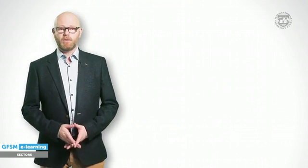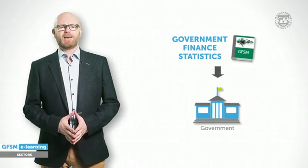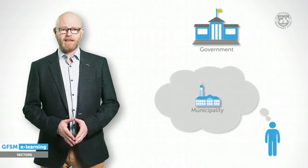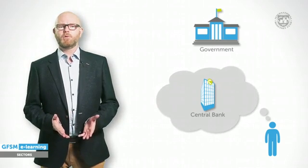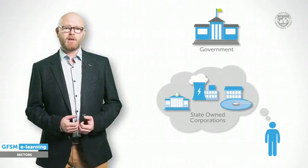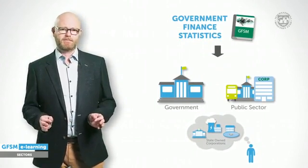At first glance, it seems quite obvious: government finance statistics cover the government. But what does government actually consist of? Some would assume that government covers the ministries, municipalities, provincial governments and the like. Others say this includes the central bank. What about the government owning shares in corporations, such as energy companies, postal banks or local water treatment companies? And how does government relate to the concept of the public sector? A practical and sound definition of the structure of the economy is needed to prepare statistics that are fit for use. This will help make fiscal analysis meaningful and data internationally comparable.